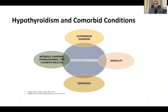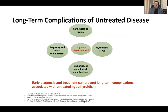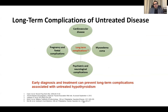Hypothyroidism is associated with comorbid conditions like depression, autoimmune disorders, infertility, metabolic disorders like hyperlipidemia, and type 2 diabetes. Infertility and menstrual disturbances are linked with hypothyroidism, and we recommend all infertile couples or patients with menstrual issues have at least a TSH screening test. Long-term complications of untreated hypothyroidism include cardiovascular disease, pregnancy and fetal complications, psychiatric and neurological complications especially in the developing age, and in severe cases myxedema coma. Early diagnosis and treatment can prevent these long-term complications.